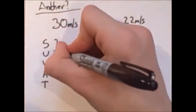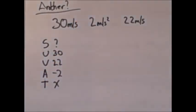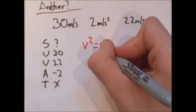So we are looking for S, and we have U, V, and A. We do not have T, so we are going to use V squared equals U squared, plus 2 times A times S.